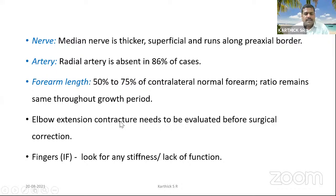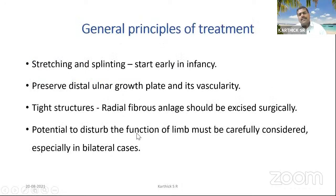Before surgical correction, always assess for elbow extension contracture. A child with radial deviation of the wrist can reach the mouth without elbow flexion, so confirm elbow flexion is present before wrist surgery. Also assess the index finger's functional ability and suppleness if future pollicization is planned. General treatment principles: stretching and splinting should start as early as possible to preserve distal ulnar growth plate and vascularity, and the radial fibrous anlage should be surgically excised. In bilateral cases and older children who have adapted function, potential to disturb function must be carefully considered.